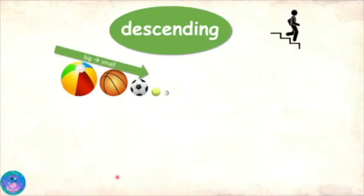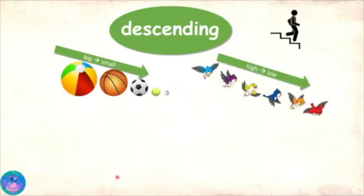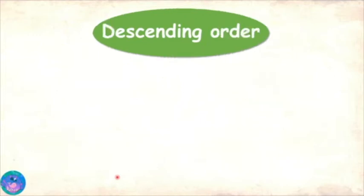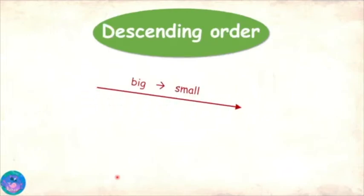The descending goes down, and it means going from big to small, high to low, old to young, more to less, and so on. Excellent, Sam. When we have numbers arranged in descending order, it also means that they are arranged from big to small.